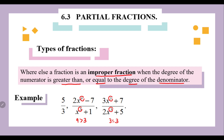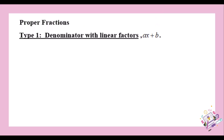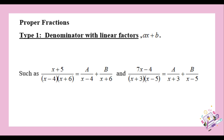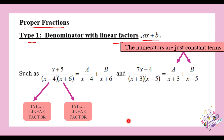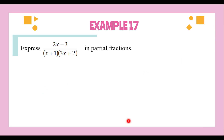So when we want to do partial fractions, the first thing we must recognize is whether we are given a proper fraction or improper fraction. Once we have recognized that we are given a proper fraction, we need to identify whether it is type 1 (linear factor), type 2 (repeated linear factor), or type 3 (quadratic that cannot be factorized). In this video, we will be covering type 1 where the factors are linear. When the factors are linear, the numerators will be constant terms.